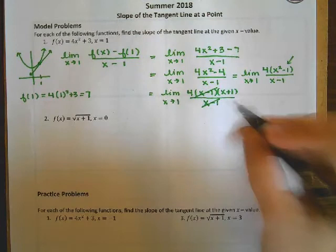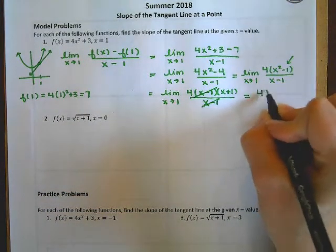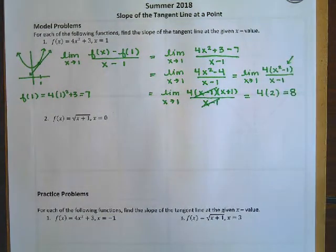And then we don't need to really worry about that now. But now that that's gone, that's what's causing the 0 over 0, I can now plug in. So 4 times 2, which gives me 8.